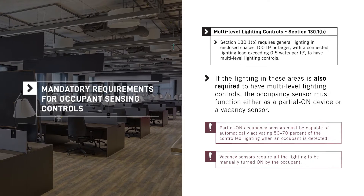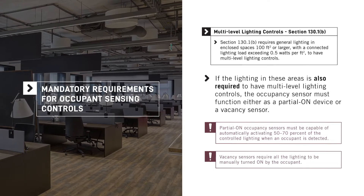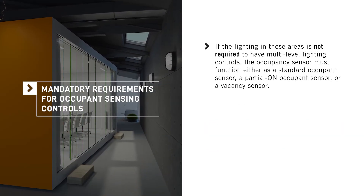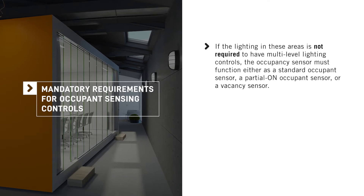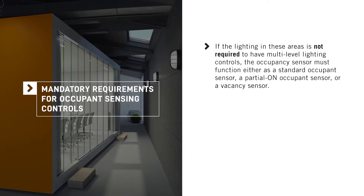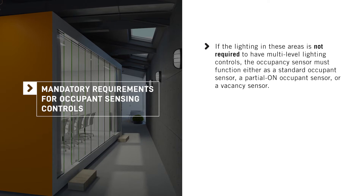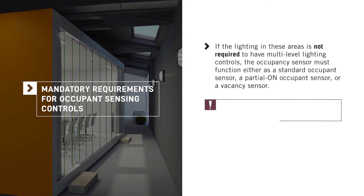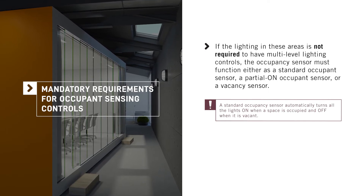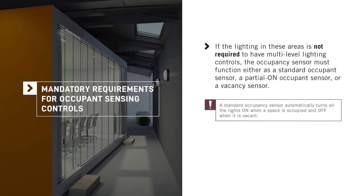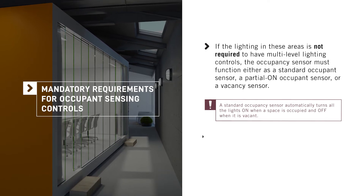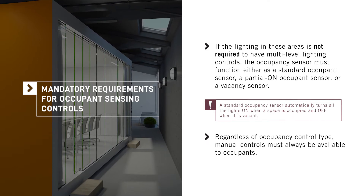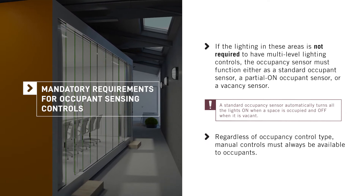Vacancy sensors require all the lighting be manually turned on by the occupant. If the lighting in these areas is not required to have multi-level lighting controls, the occupancy sensor must function either as a standard occupancy sensor, a partial-on occupancy sensor, or a vacancy sensor. A standard occupancy sensor automatically turns all the lights on when a space is occupied and off when it's vacant. Regardless of the occupancy control type, manual controls must always be available to occupants.